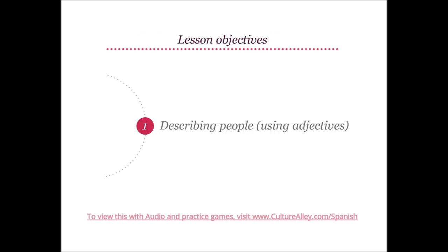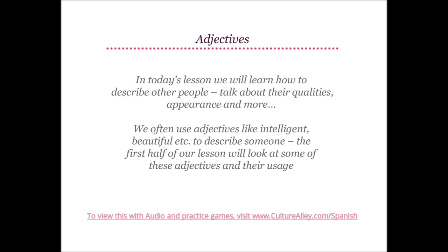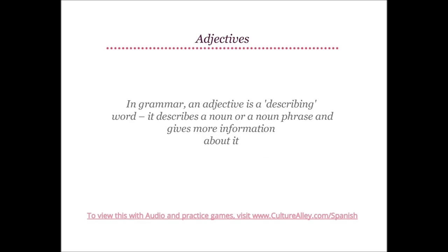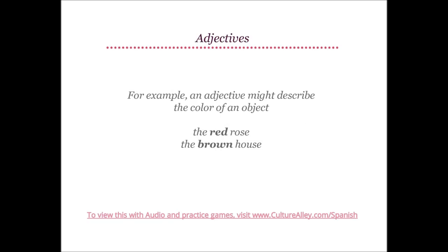Let's move on to today's lesson, which is about describing people. In today's lesson, we will learn how to describe other people, talk about their qualities, appearance, and more. We often use adjectives like intelligent, beautiful, etc. to describe someone. In grammar, an adjective is a describing word — it describes a noun or a noun phrase and gives more information about it. For example, an adjective might describe the color of an object.